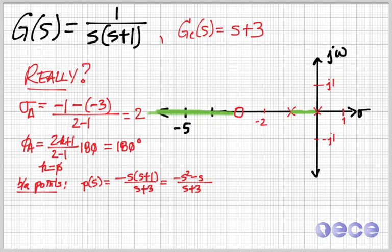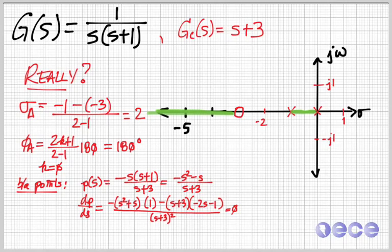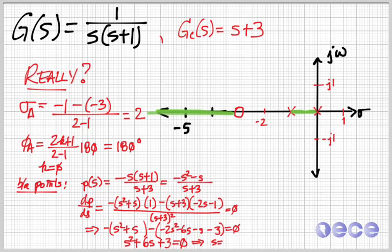So now we can calculate the breakaway point. So again, we're going to multiply s plus three over s times s plus one. Now we're going to invert that and set it equal to zero after we take its derivative. So dp ds, so we take some derivatives here, set it equal to zero. The minus signs sort of don't matter and the s plus three squared on the bottom sort of doesn't matter. So now we put all these pieces together and we get that the roots are at minus 0.55 and minus 5.45.